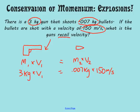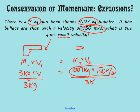So we can set those equal to each other. So we have 3 kilograms times V1 is equal to .007 kilograms times 150 meters per second. Now, hopefully, some simple algebra here, we can multiply these together, and then we're going to go ahead and divide both sides by 3 kilograms. When we do that, we find that the velocity of the gun, the recoil velocity of the gun, is .35 meters per second. That would be in the direction of the gun.